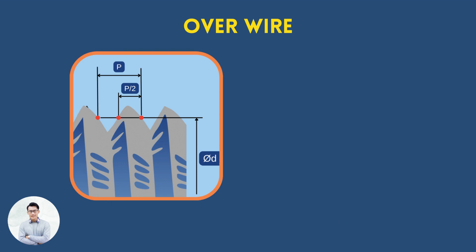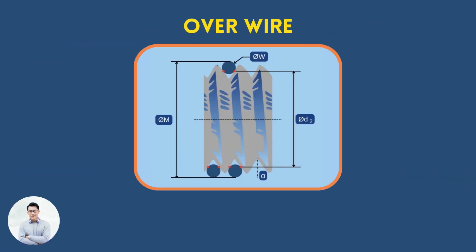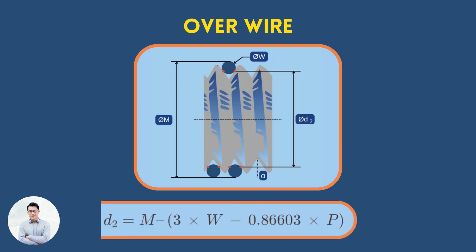Overwire is a nickname for a measuring method of the pitch diameter. A wire with a known and precise diameter is placed between the thread and the jaw of a micrometer. The measurement of the diameter over the wire is used in a formula to calculate the pitch diameter. The formula is different depending on the geometry of the thread profile.